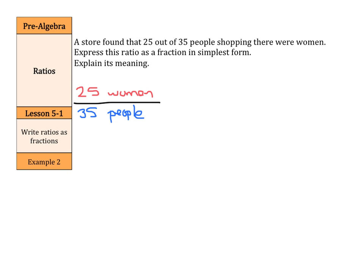Once again, we can write this in simplest form. This time, we can divide both the 25 and the 35 by 5, so that we end up with five women out of seven people.